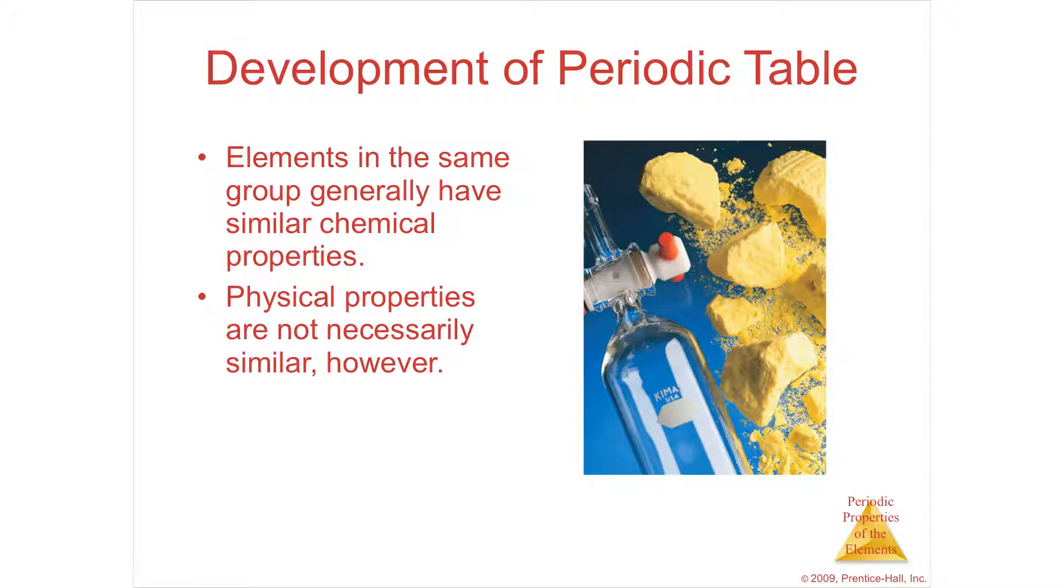It's not always the case, though, that the physical properties are the same. So, for instance, in the same column, oxygen and sulfur are there. Oxygen is a gas. Sulfur is a yellow powder. It doesn't really predict everything in terms of columns.